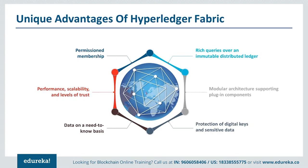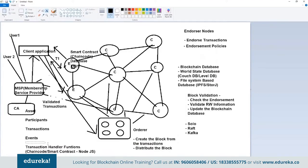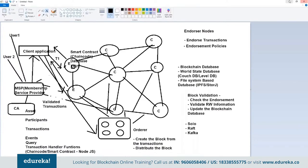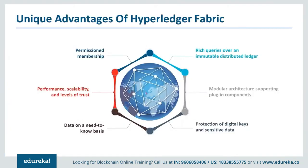Unique advantages of Hyperledger Fabric include permissioned membership, rich queries over an immutable distributed ledger, and a modular architecture supporting plug-in components. You can also define a query file — similar to SQL-like queries — defining what information you're expecting from the blockchain at any point in time. Everything in Hyperledger can be plugged out and plugged in based on your requirement. There are separate modules for protecting keys — the Certification Authority is specifically kept for securing your keys, and you can use your own CA if you don't want to use the Fabric CA.